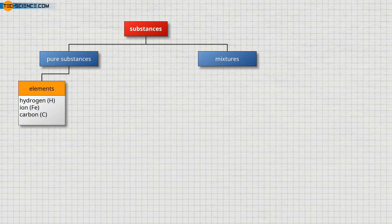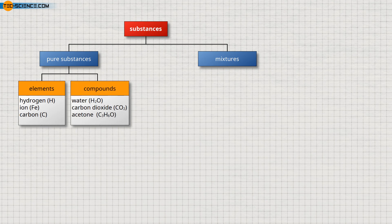Not only single atoms, but also whole molecules can form pure substances. These substances are characterized by a certain atomic ratio and are referred to as chemical compounds. Pure compounds, for example, are water, carbon dioxide, or acetone.